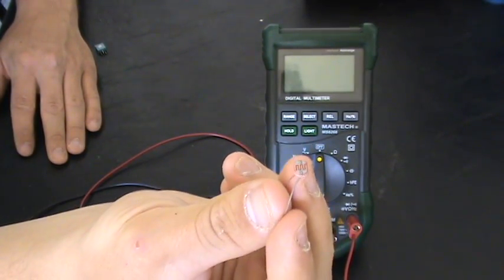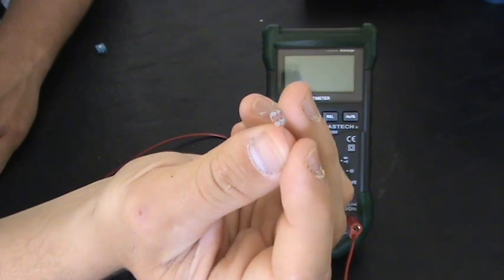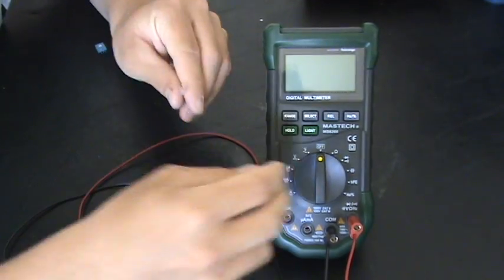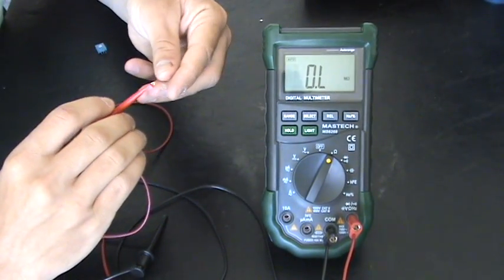So what these photocells do is they change their amount of resistance based on how much light they receive. The easiest way to show you this is to hook it up to a multimeter and show you.